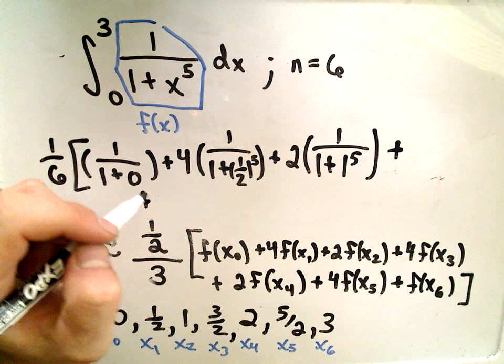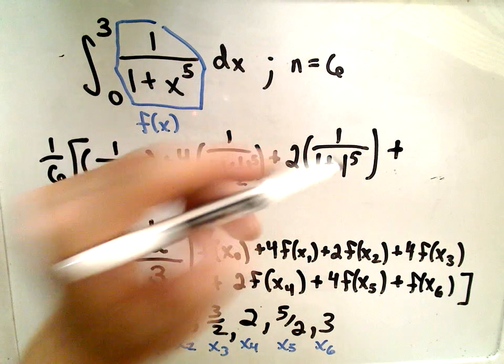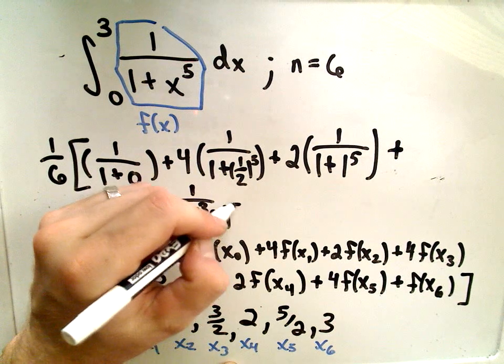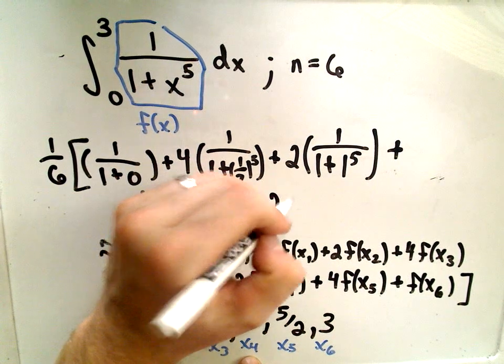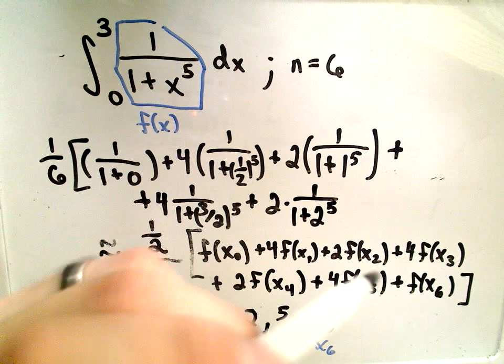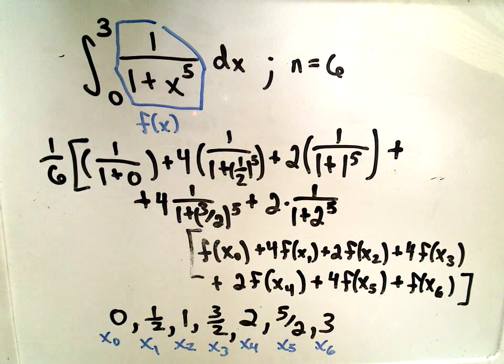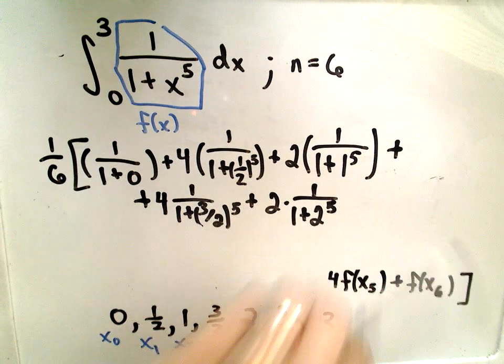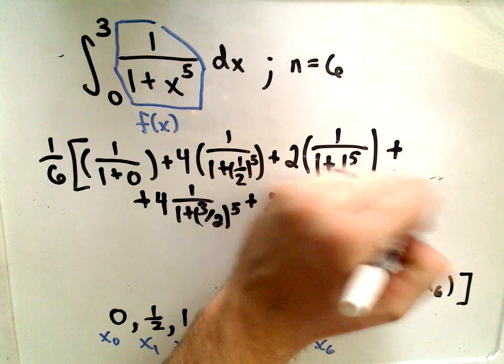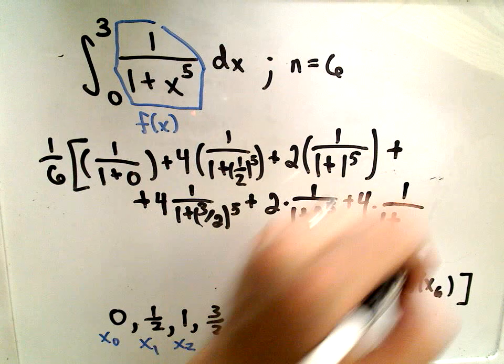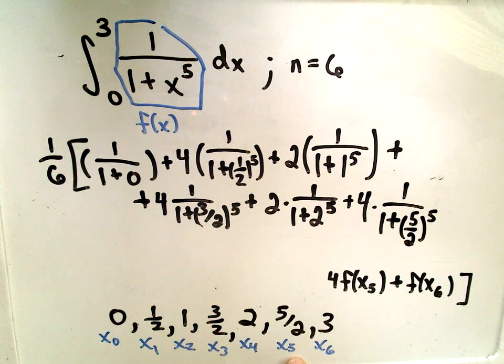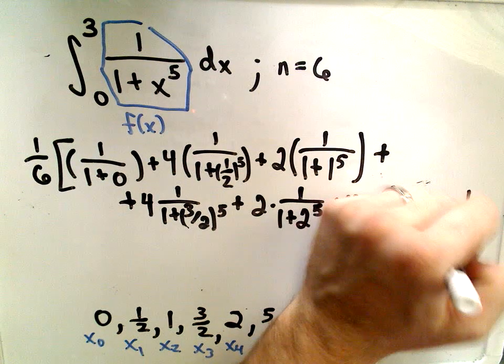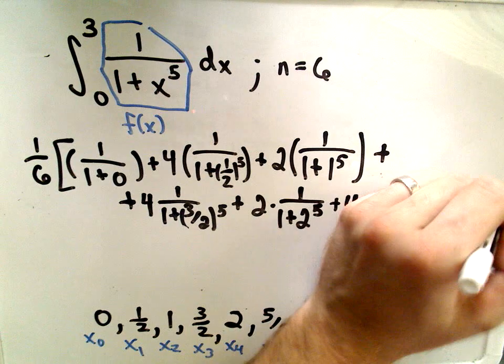So, we'll get 1 plus 1 to the 5th power. Plus, let me squeeze it in over here. So, let's see. So, that was f of x sub 0, 1, 2. So, we have 4 times our x sub 3 value, which will be 1 plus 3 halves, raised to the 5th power. Then we'll have 2 times - we'll have to plug in 1 over 1 plus 2 to the 5th power. Ooh, you can already see pretty tedious, right? So, x sub 0, 1, 2, 3, 4. We're now on our x sub 5. So, we'll get plus 4 times 1 over 1 plus - our x sub 5 value is 5 halves - we have to raise all that to the 5th power. And then, last but not least, we just have to plug the last point into our function. So, 1 over 1 plus 3 to the 5th power. Whew. Okay. So, very tedious to compute here. You can see for sure.